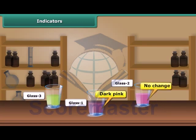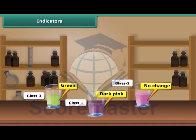There is no color change in glass two because water is neutral in nature. In the third glass, the color changes to green. Thus we can conclude that the indicator solution obtained from china rose turns bright pink in the presence of an acid and green in the presence of a base. We can put a drop of this indicator in any food item to know whether it is acidic or basic.